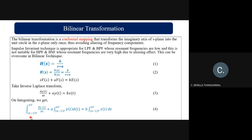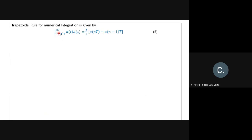Integrating from (n−1)T to nT, the trapezoidal rule for numerical integration states that the integral of a function over [t_{n-1}, t_n] equals (T/2)·[f(t_n) + f(t_{n-1})], i.e., T/2 times the sum of the upper and lower limit values. Similarly, the integral of dy(t)/dt equals the difference of the function at its upper and lower limits. Applying these two rules to our differential equation gives the discrete-time approximation.